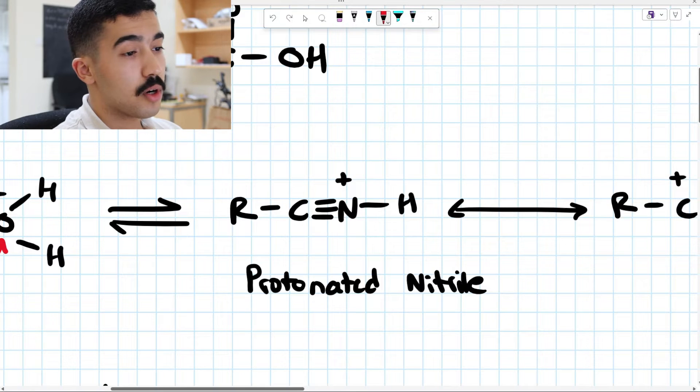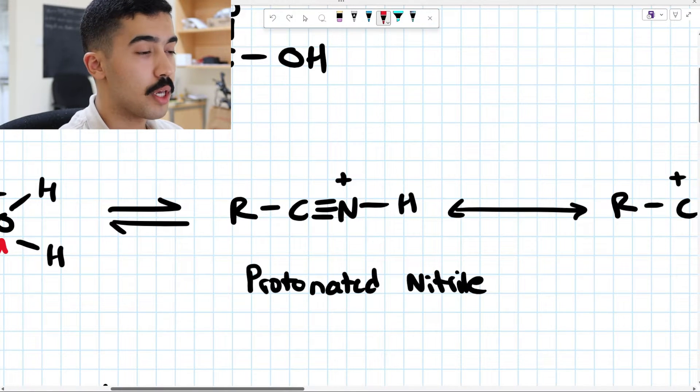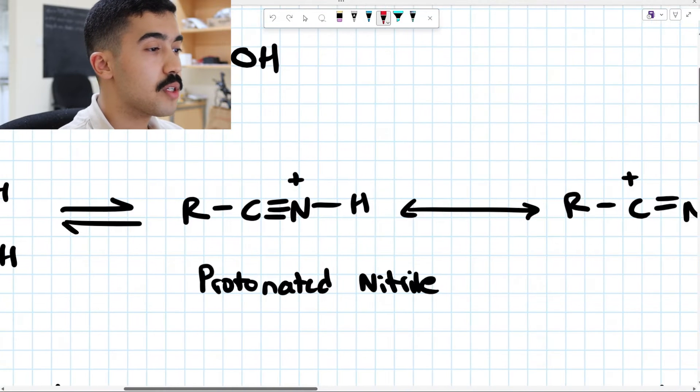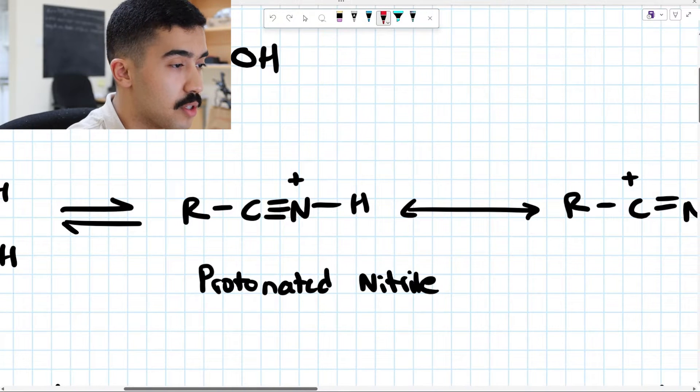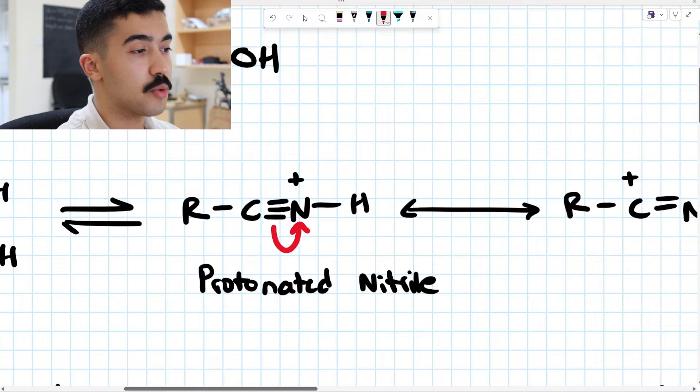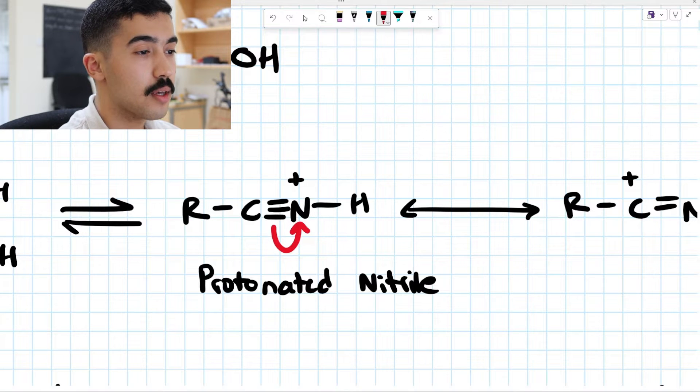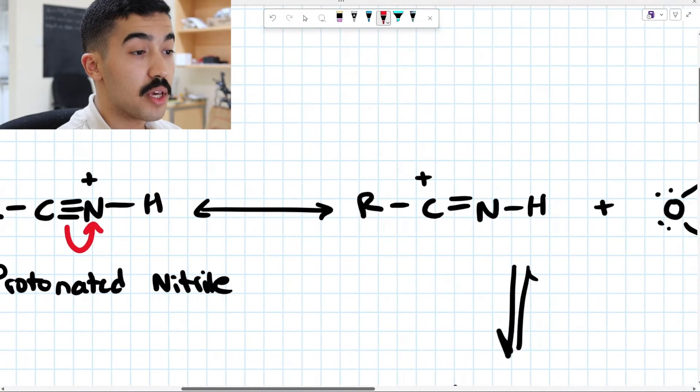Now our protonated nitrile will undergo resonance. You don't always have to show this, but I'm showing it here as a proof of concept. It will undergo resonance. And what that means is you can have this bond right here between the C triple bond break and you will form a carbocation.